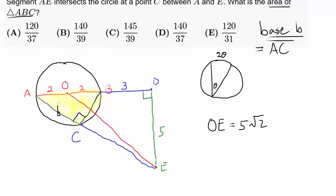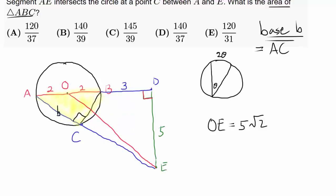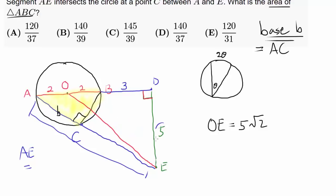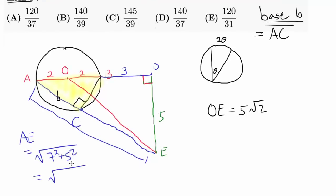We also have the big right triangle ADE. We can find AE using the Pythagorean theorem. The two legs are ED equals 5 and AD equals 2 plus 2 plus 3 equals 7. So AE equals the square root of 7 squared plus 5 squared, which is the square root of 49 plus 25, or square root of 74.